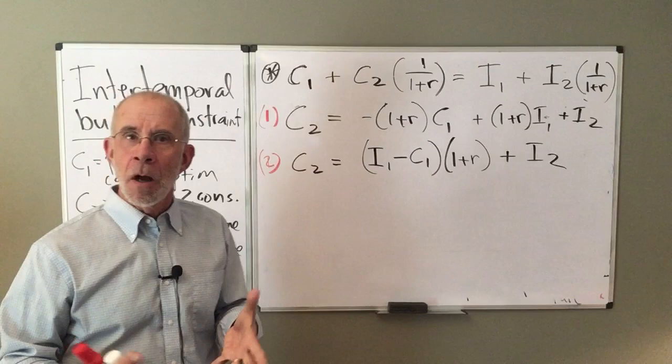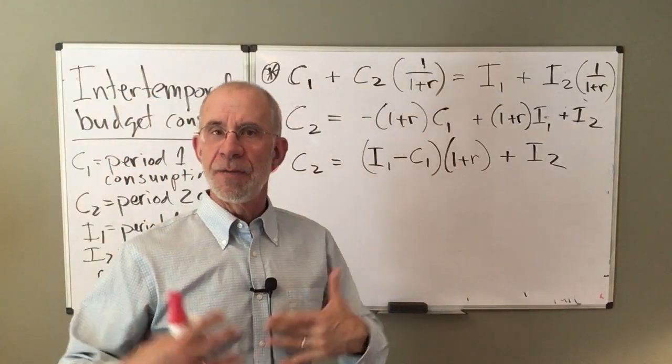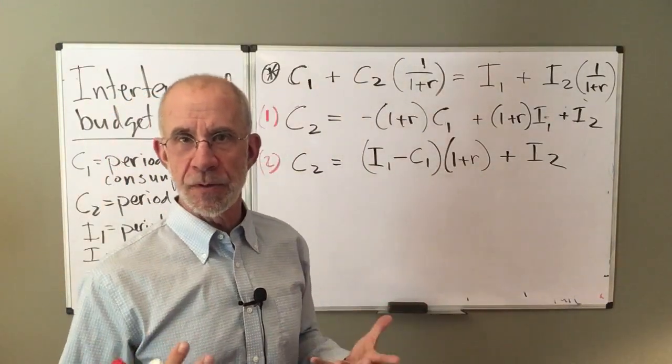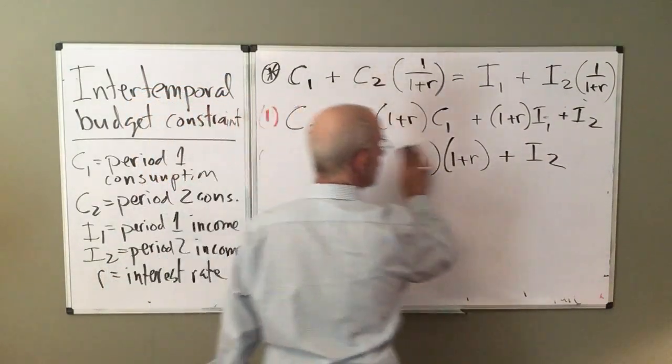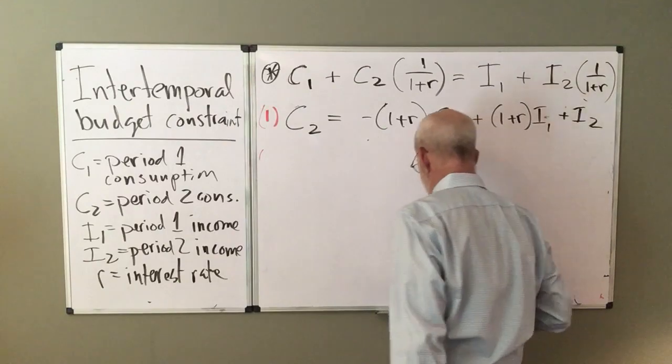The income in period one minus what you consume. So this is savings. You can save that and get one plus the interest rate. You'll have that as another source of income in the second period left over from the first period.